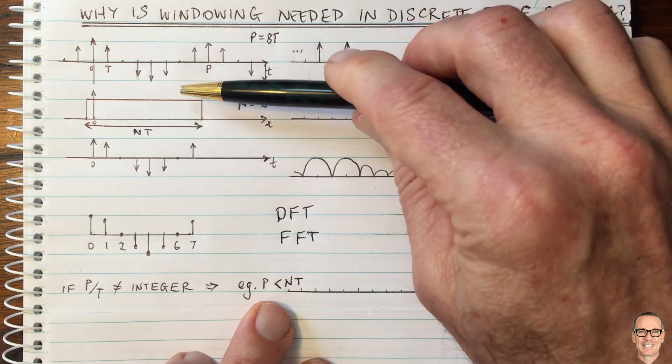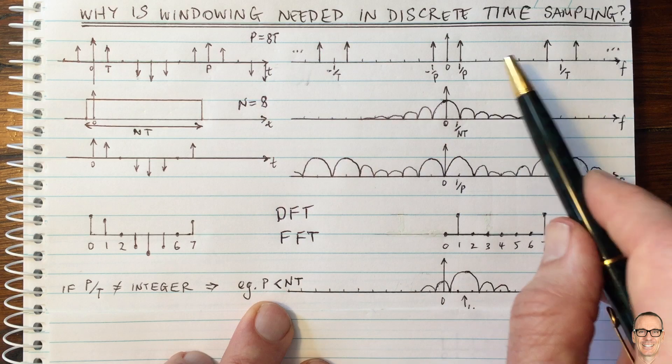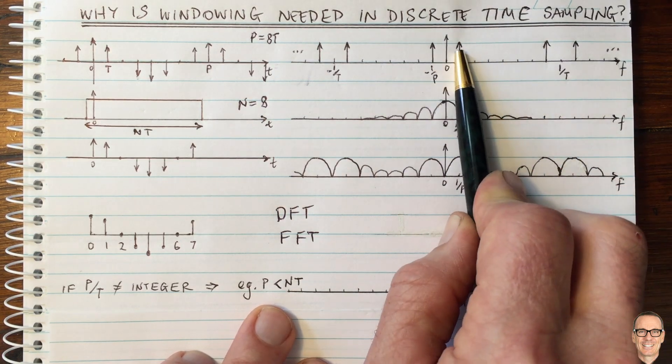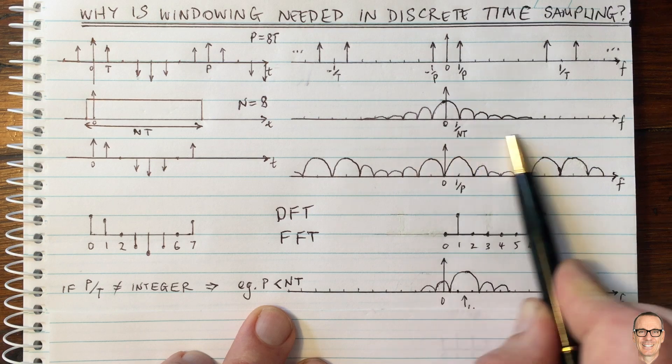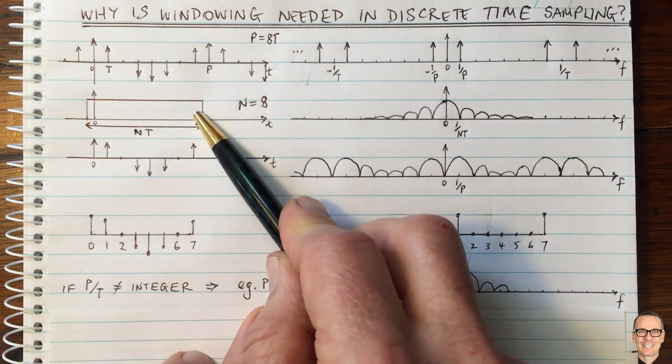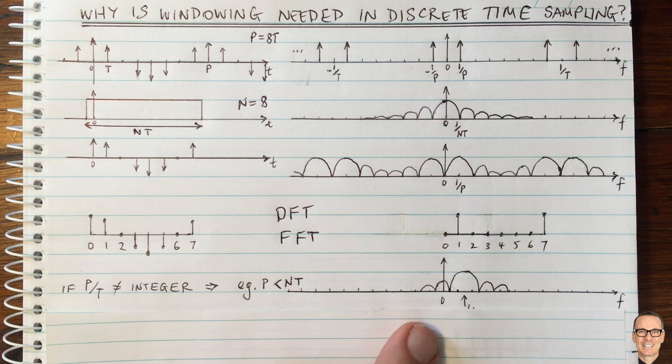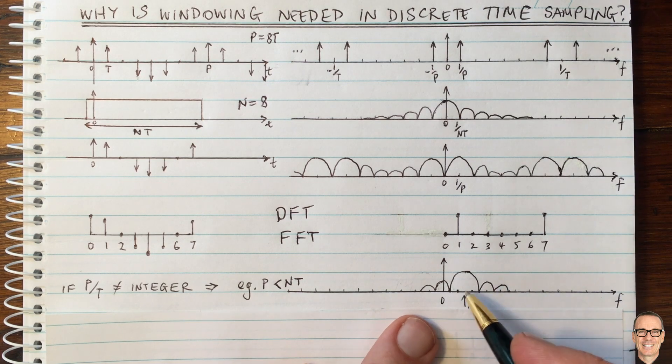If we think through the steps of what the impact of that, then one on P is now going to be a bigger number. So this arrow here moves out to the right. This does not change because we're still windowing over the same period of time. So now this would be moved out to the right. And so in the frequency domain,